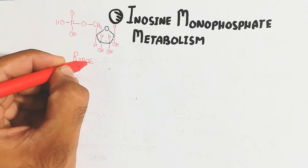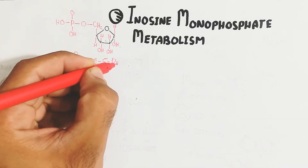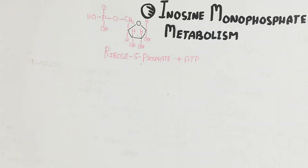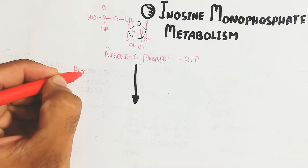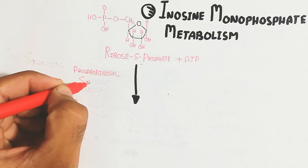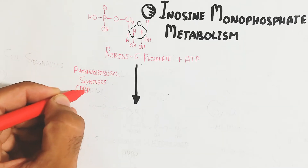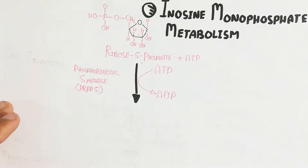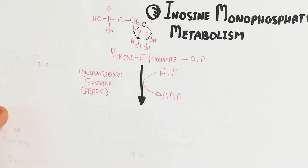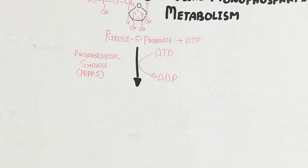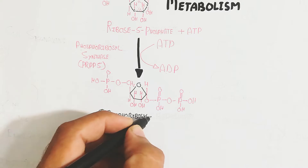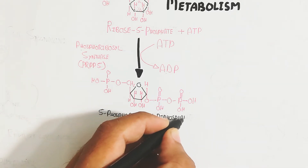This is the ribose-5-phosphate. Ribose-5-phosphate is added with ATP, and in the presence of the phosphoribosyl synthase enzyme (PPRS), ATP is used to donate a phosphate group to ribose-5-phosphate to form 5-phosphoribosyl-1-diphosphate, also known as PRPP.